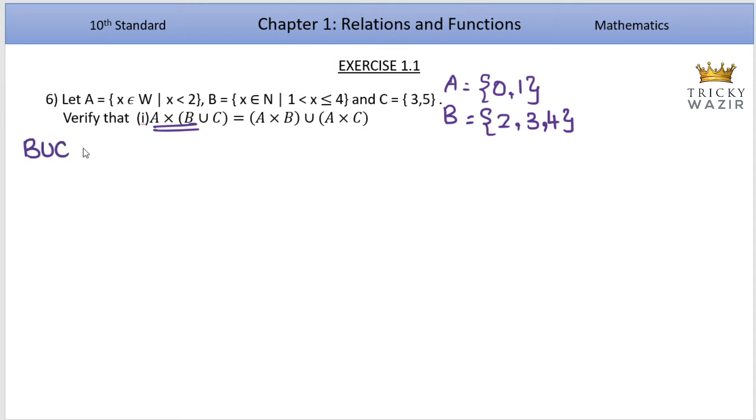B union C. B has elements 2,3,4. Union C has elements 3,5. B union C equals 2 merge, repeating terms higher.